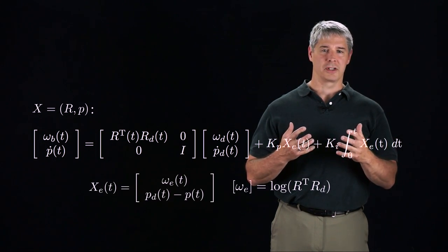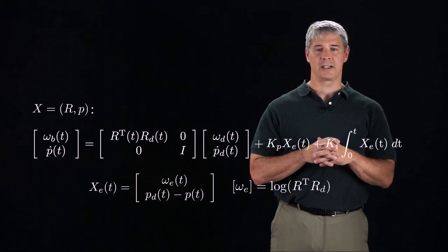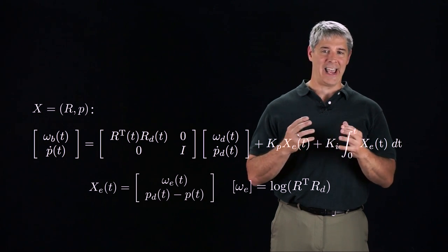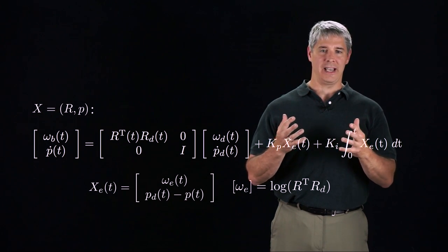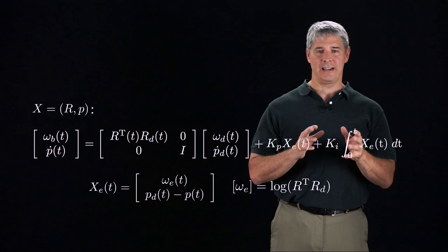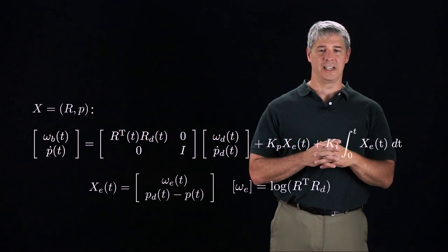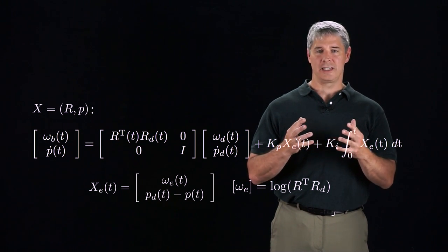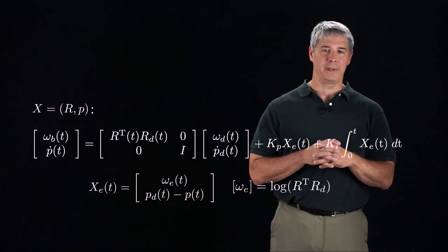The PI feedback portion of the controller defines a configuration error, XE, that has an angular velocity expressed in the end effector frame that takes the end effector to the desired orientation in unit time, as well as the typical coordinate error for the position P.